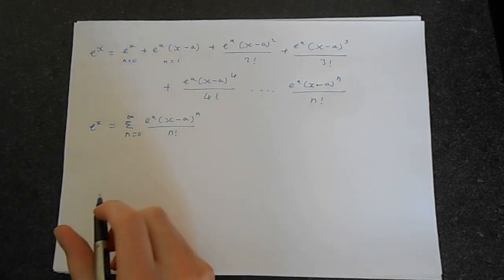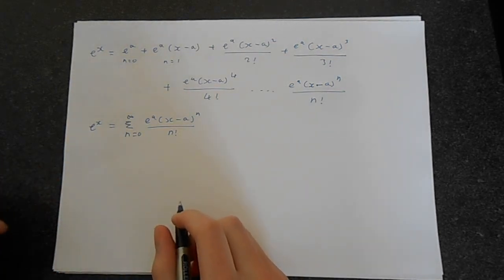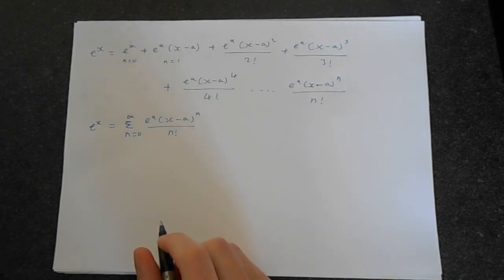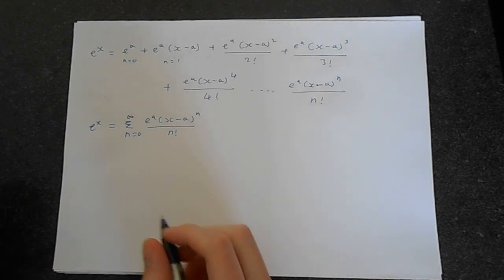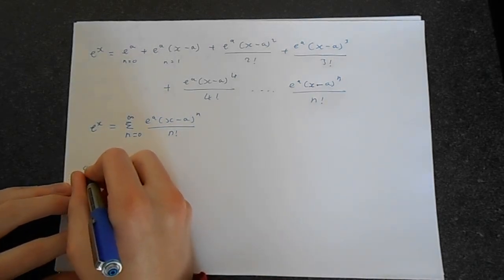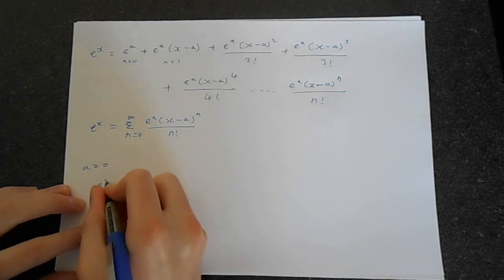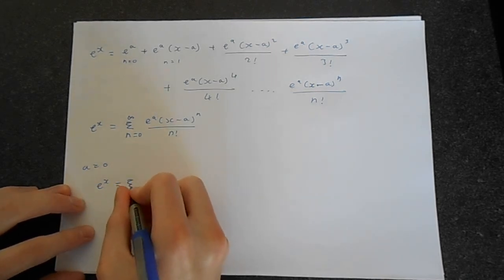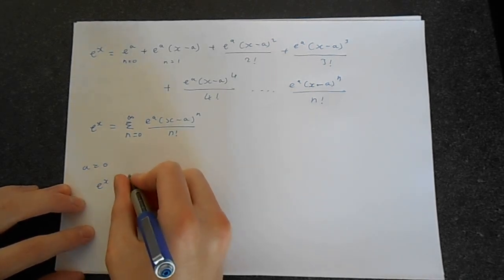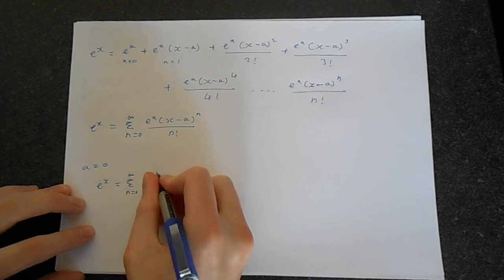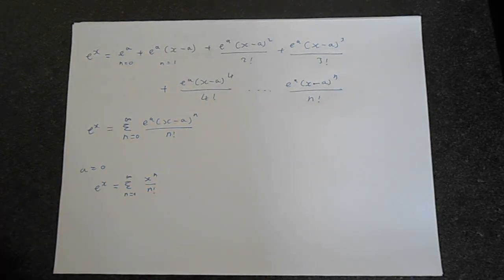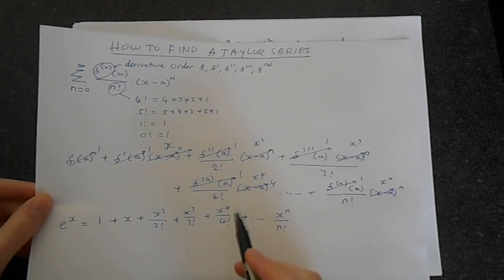The Maclaurin series that we had before could be written in a similar way, and this is usually the way that e to the x is explained. So with the Maclaurin series, where a equals 0, we could say that e to the x is a summation from n equals 0 to infinity of x to the n over n factorial. That's what we had previously.